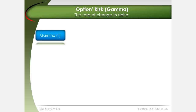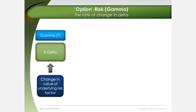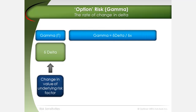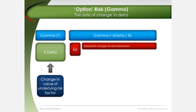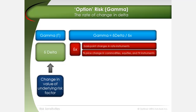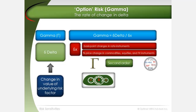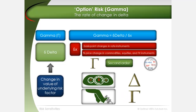Gamma is defined as the rate of change in delta as a function of the price or rate level of the underlying instrument. Gamma equals the change in delta divided by the change in X, where delta X represents basis point changes in underlying interest rates and percentage price changes in underlying commodities, equities, and FX instruments. Gamma is a second order Greek according to the Taylor series expansion. One analogy for delta and gamma is speed and acceleration: speed or delta measures the distance traveled or profit and loss for a certain change in rates, while acceleration or gamma measures the rate of change in speed or delta over time or over a rate change.